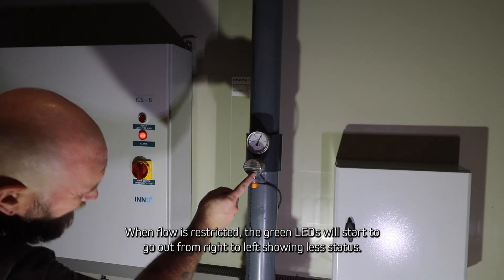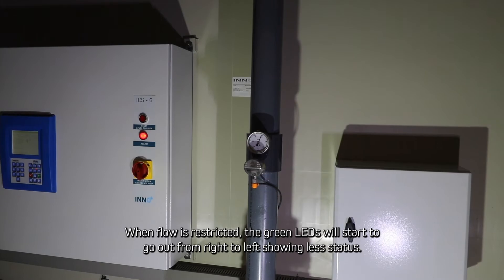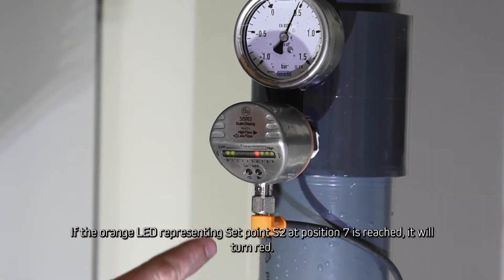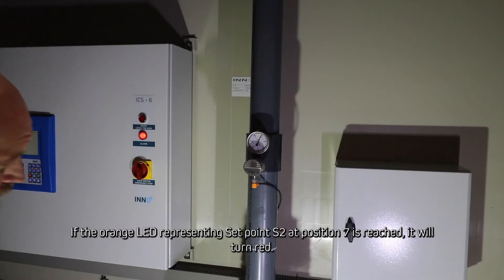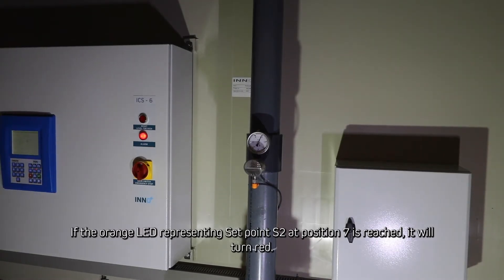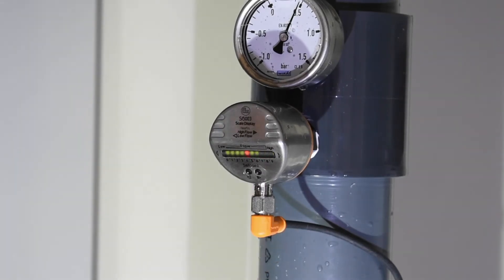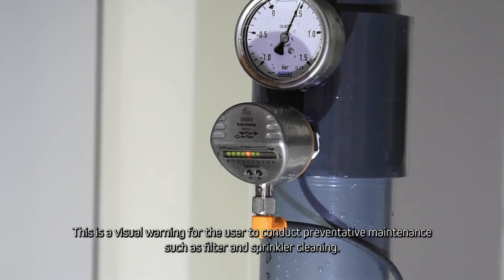When flow is restricted, the green LEDs will start to go out from right to left showing less status. If the orange LED representing setpoint S2 at position 7 is reached, it will turn red. This is a visual warning for the user to conduct preventative maintenance such as filter and sprinkler cleaning.